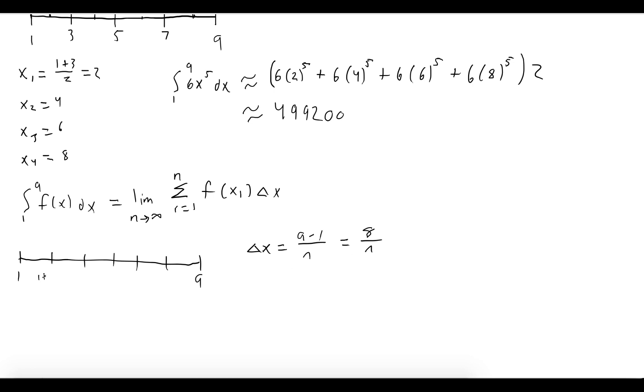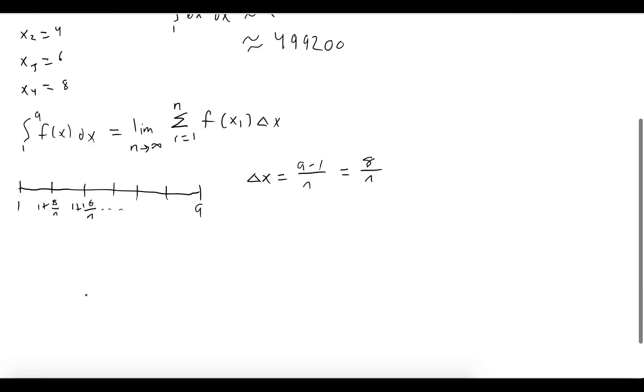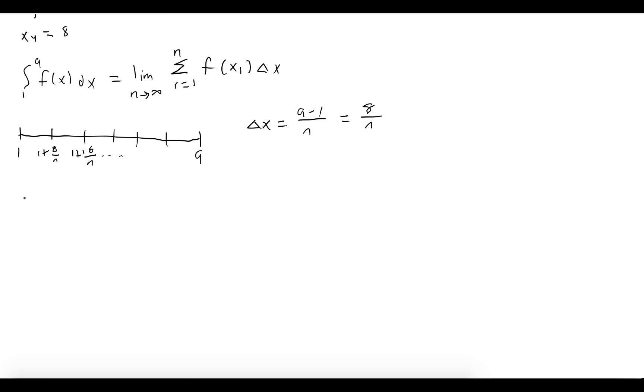So the first endpoint is 1 + 8/n, the next one is 1 + 16/n, and so forth. So let's rewrite that. x₁, our first sample point, is 1 + 8/n.